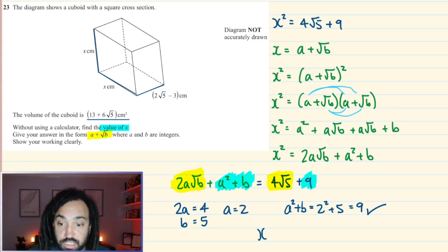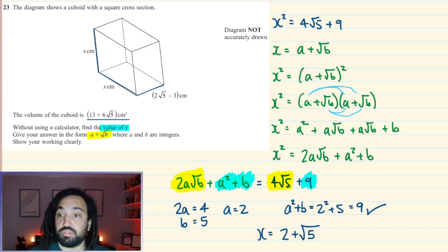So final answer is x is equal to 2 + √5, because of course we know that it's a + √b. Okay, I hope you enjoyed that and I'll see you in the next one. Bye for now.